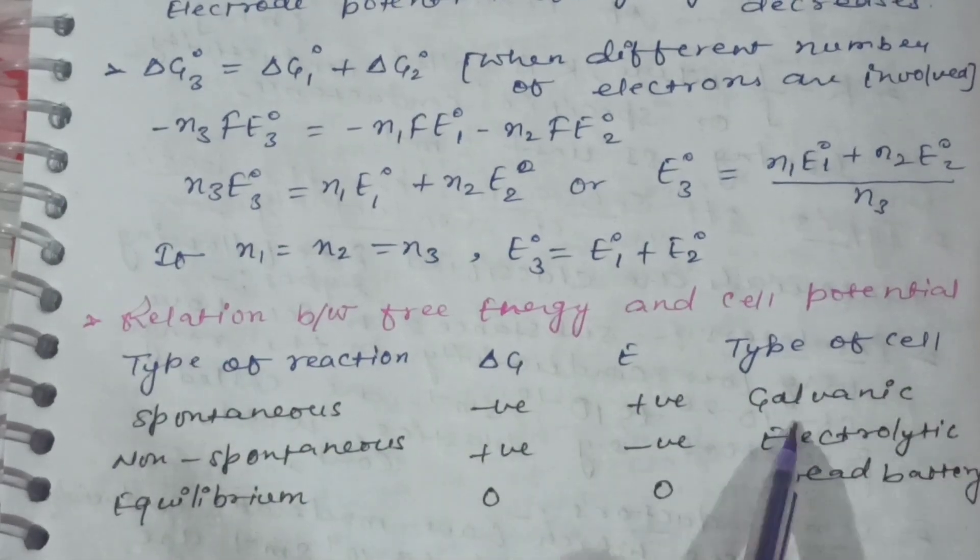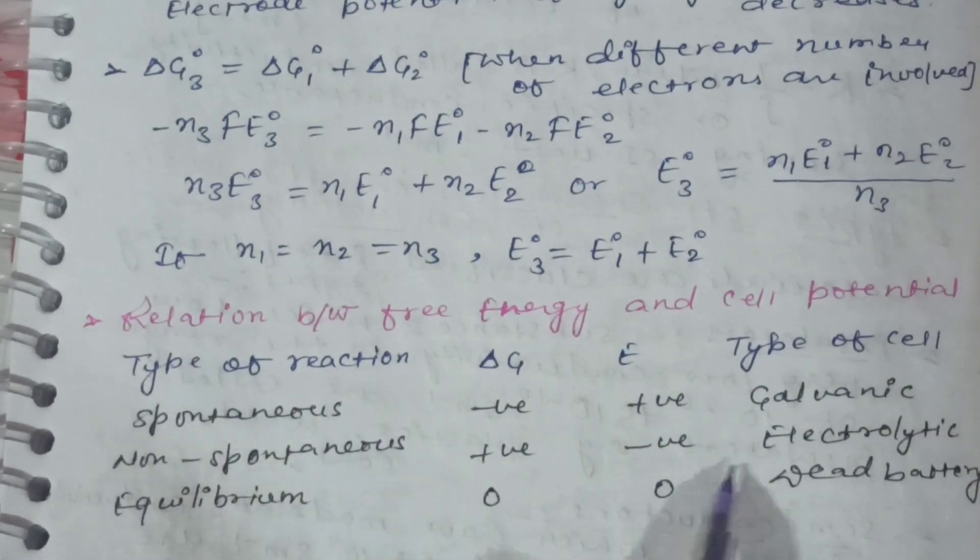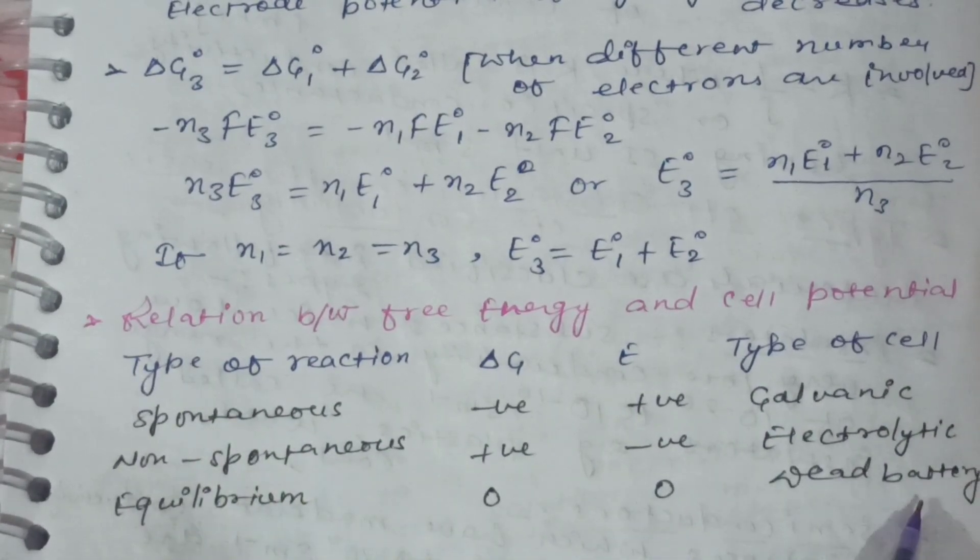The relations between the free energy and the cell potentials. Type of reaction, ΔG, E, type of cell: spontaneous, negative, positive, galvanic; non-spontaneous, positive, negative, electrolytic; equilibrium, 0, 0, dead battery.